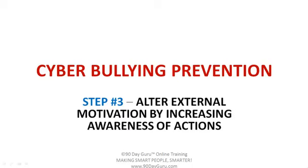Step number three: alter the external motivation by increasing awareness of actions. Making it known that this is bullying, regardless of whether it's cyberbullying. When you make them aware of their actions and bring public awareness to it, it will definitely prevent cyberbullying.